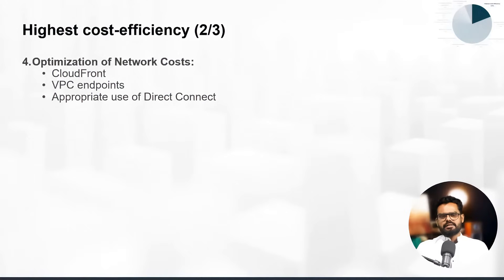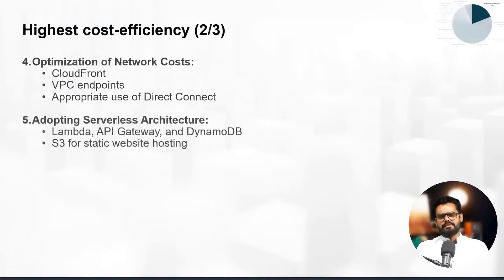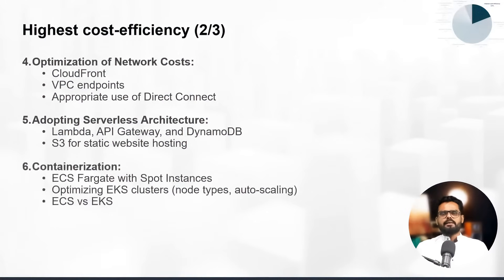Direct Connect generally has a high setup cost, so it's important to consider the requirement. A serverless architecture helps reduce cost — with serverless, you don't need to worry about server management cost, making it more cost effective. Containers also come up in cost optimization. The combination of ECS and Fargate often appears in serverless architecture. With a serverless architecture, you can achieve cost optimization, reduce operational overhead, and improve scalability.